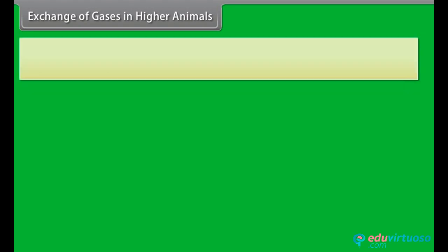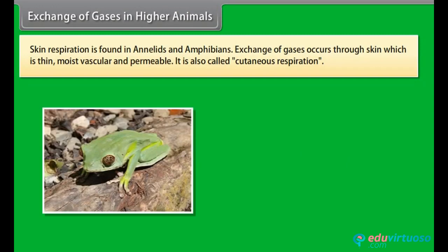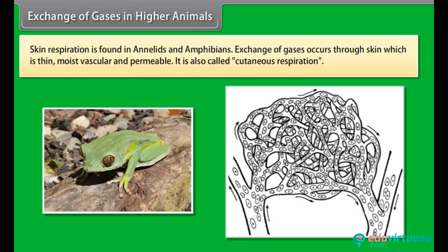Skin respiration is found in annelids and amphibians. Exchange of gases occurs through the skin, which is thin, moist, vascular and permeable. It is also called cutaneous respiration.